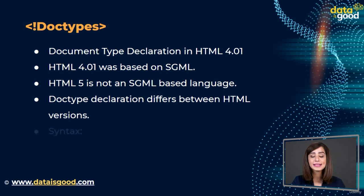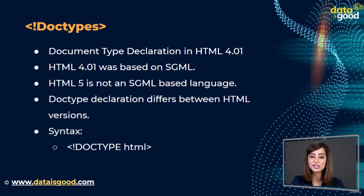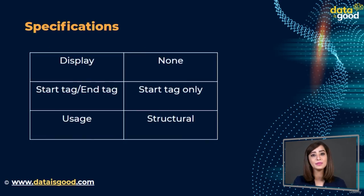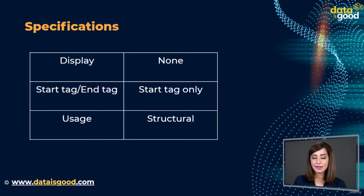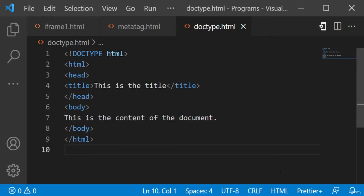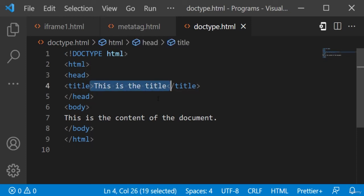The HTML5 doc type declaration is shown on your screen. See the syntax on your screen. Here are some specifications about the HTML doc type — take a look at the table: display none, start tag or end tag: start tag only, usage: structural. Here's an example of an HTML document with a doc type declaration — this is the title, and this is the content of the document.